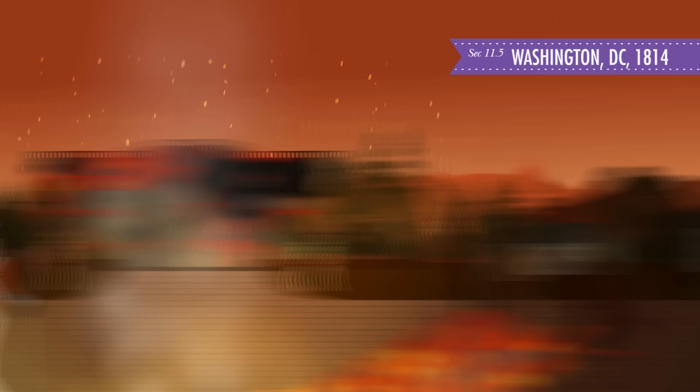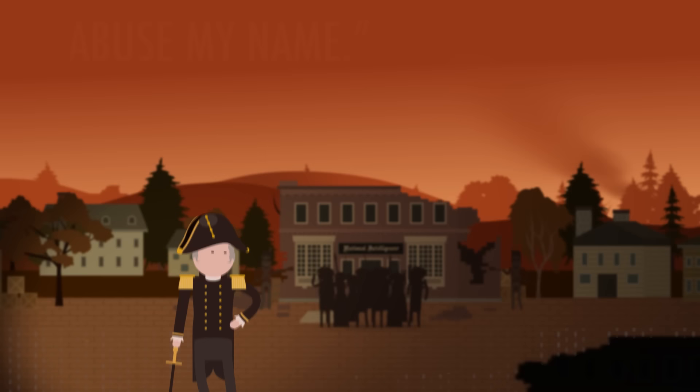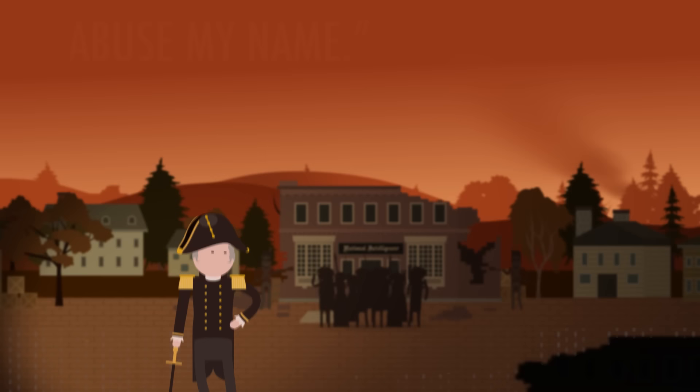The British found much more success, even seizing Washington DC and burning the White House. In the course of the battle, British Admiral George Cockburn, overseeing the destruction of a newspaper printing house, told the forces that took the city, be sure that all the seas are destroyed so that the rascals cannot any longer abuse my name. It's hard out there for a Cockburn. Thanks, Thought Bubble.